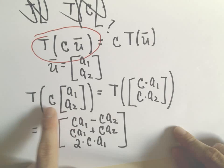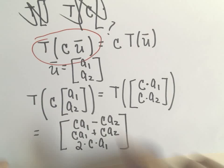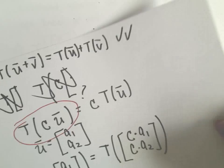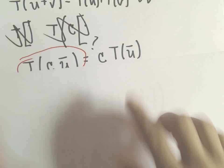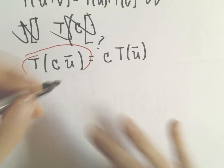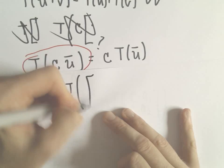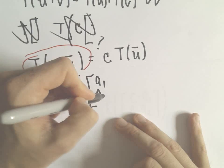This is multiplying our vector by a scalar then applying the transformation. Now I'm going to do the right side and we'll just compare whether or not these are equal. Let's figure out an expression for the right side. We've got C times the transformation of vector u. That has components a1 and a2.